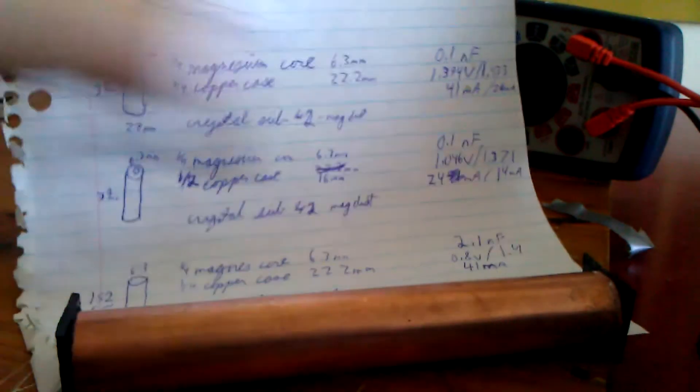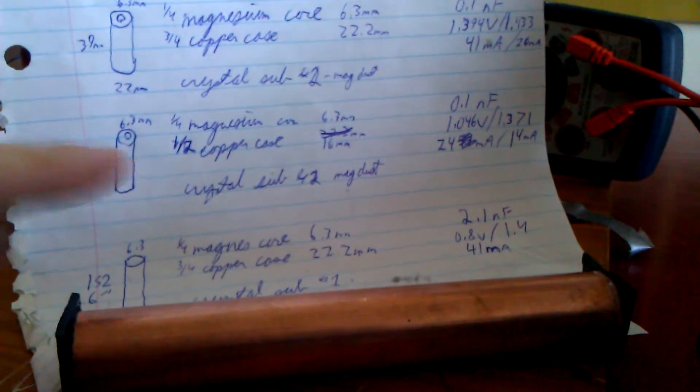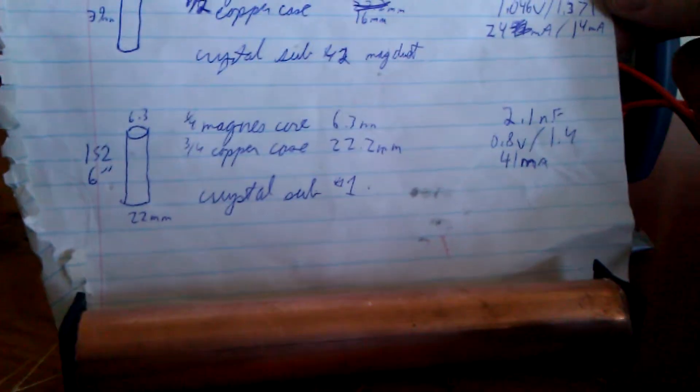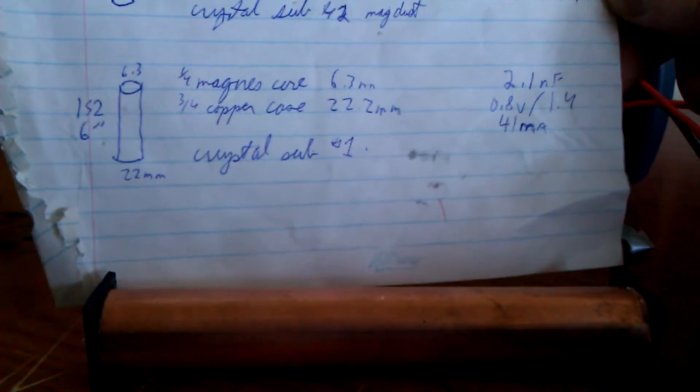Next is a half inch diameter crystal cell, as you can see, and its dimensions. And this is my 6 inch length crystal cell. And you can see its approximate values.